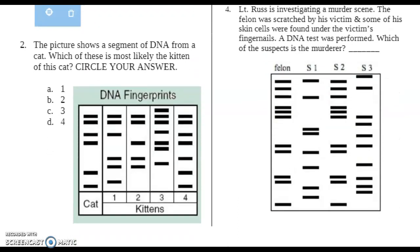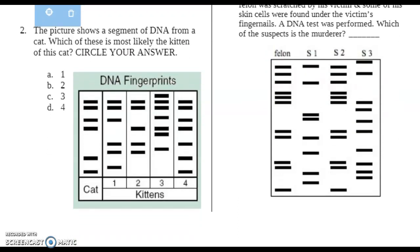The picture shows a segment of DNA from a cat. Which of these is most likely the kitten of this cat? Circle your answer. This right here, this first little segment, that's the mama cat. And they want to know which one is this mama's kitten. It's not going to match exactly because the kitten, of course, would get some DNA from the father as well as DNA from this mother cat. But we'd expect to see some bands from this mother cat in the kittens.